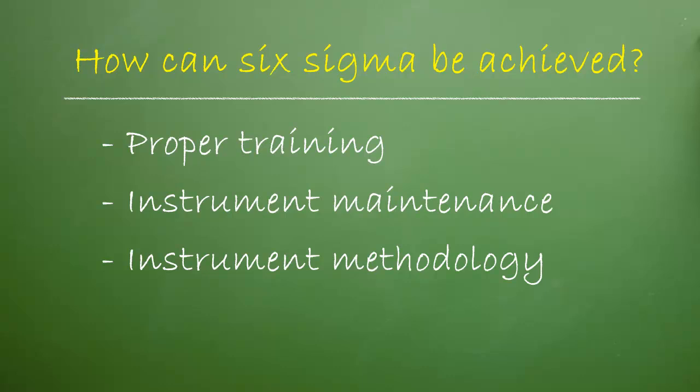While method precision may not be controllable, a QC procedure can be chosen that detects small changes in the testing system. This makes identifying defects easier so that corrective action can be taken.